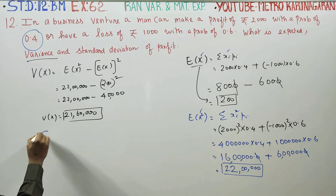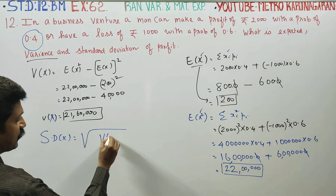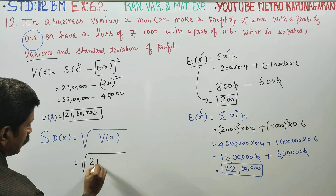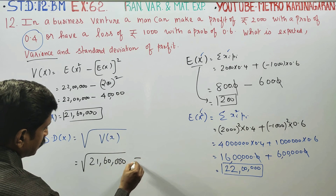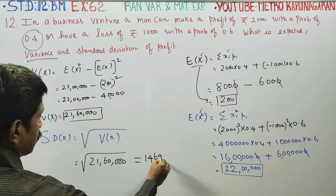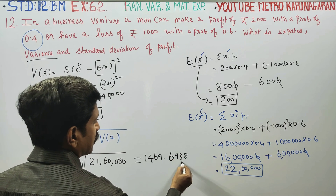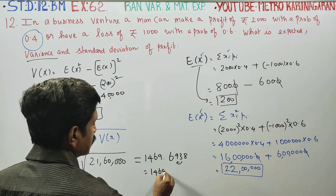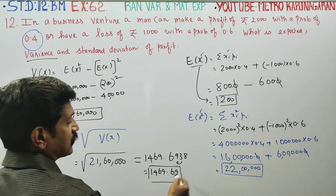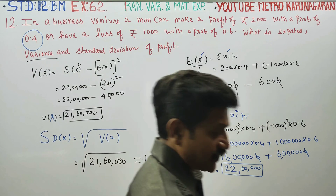Now, what is the standard deviation? The standard deviation of X is the square root of the variance. Standard deviation = √21,60,000. Using a calculator, the answer is approximately 1469.69. Rounding to two decimal places, the standard deviation of this problem is 1469.69. This is the final answer for standard deviation of the profit.